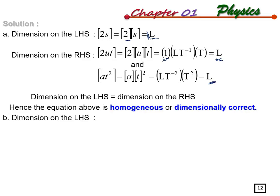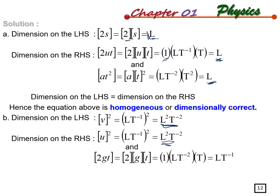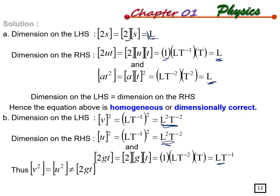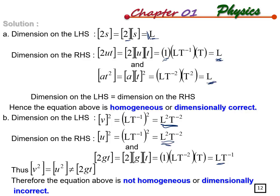For question B: left-hand side is v squared, giving dimension L squared over T squared. Right-hand side has u squared giving the same L squared over T squared, but also 2gt which gives dimension L over T. Since L squared over T squared is not equal to L over T, the equation is not homogeneous - it is dimensionally incorrect.